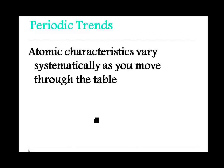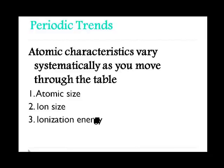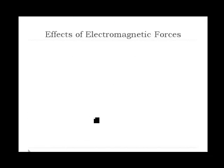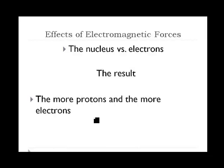Atomic characteristics vary systematically as we move throughout the table. Some of these changes that we'll see are in atomic size, ion size, ionization energy, and electron affinity. These are often caused by electromagnetic forces. The nucleus is positively charged and the electrons are negatively charged. The result of this is attraction — the attraction that exists between the positively and negatively charged parts of the atom. The more protons and the more electrons we have, the stronger the forces that are pulling the electrons towards the nucleus.